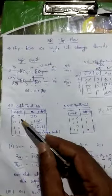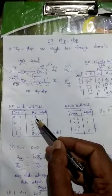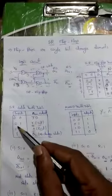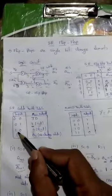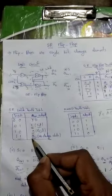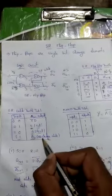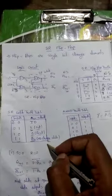In the SR latch truth table: when input is 0,0, the next state output is indeterminate — meaning Qn+1 and Qn+1 bar are both equal to 1, so the normal and complemented outputs are both 1. In the 0,1 case, the next state output is 1 — called the set condition. In the 1,0 case, the next state output is 0 — called the reset condition. In the 1,1 case, the next state output equals the present state output Qn — there is no change, and it carries the previous state output values.